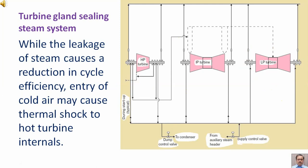While the leakage of steam causes a reduction in cycle efficiency, entry of cold air may cause thermal shock to hot turbine internals.